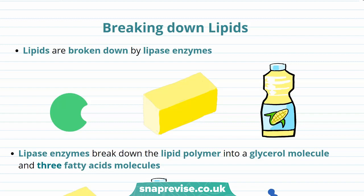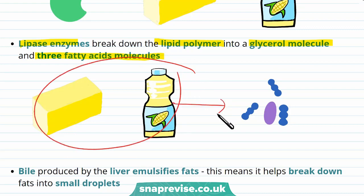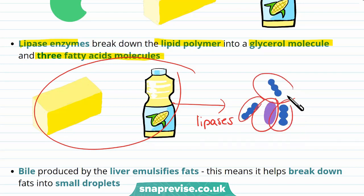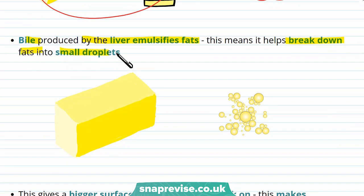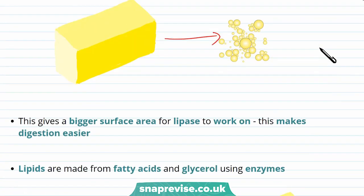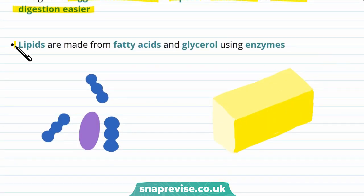Now let's talk about lipids. Lipids are broken down by lipase enzymes, and remember, lipids are found in things like butter and vegetable oil. Lipase enzymes break down the lipid polymer into a glycerol molecule and three fatty acid molecules, so the lipids found in these foods are broken down by lipases — you can see one glycerol molecule and three fatty acid molecules. Bile produced by the liver emulsifies fat, meaning it helps break down fats into smaller droplets, giving a bigger surface area for lipase to work on, which makes digestion easier. Lipids can also be made from fatty acids and glycerol using enzymes, and this process is called lipid synthesis.